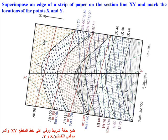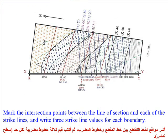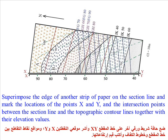Superimpose an edge of a strip of paper on the section line X-Y and mark the locations of points X and Y, the intersection points between the section line and the strike lines, and write three strike line values for each boundary. Then superimpose the edge of another strip of paper on the section line and mark the locations of points X and Y and the intersection points between the section line and the topographic contour lines.